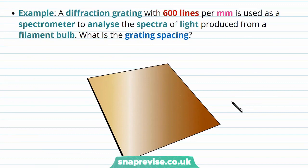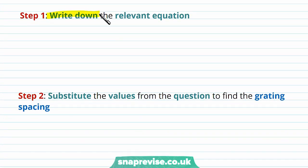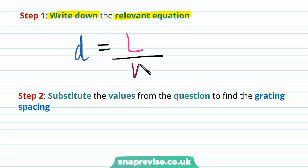Let's look at an example. A diffraction grating with 600 lines per millimetre is used in a spectrometer to analyse the spectra of light from a filament bulb. What is the grating spacing? We've been told there are 600 lines per millimetre, so we consider a one millimetre length of the grating. Our first step is to write down the relevant equation: D equals L divided by N.